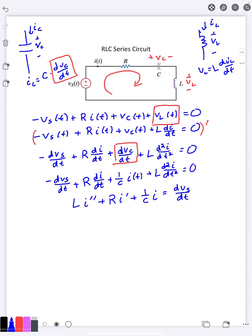So I'd have L i double prime plus R i prime plus 1 over C times i equals dVs dt. And then we usually prefer to have a leading coefficient of 1 so I divide everything by L and we get i double prime plus R over L i prime plus 1 over LC i equals 1 over L dVs dt. And so this right here is your standard differential equation for an RLC series circuit when you're trying to find the current through it.